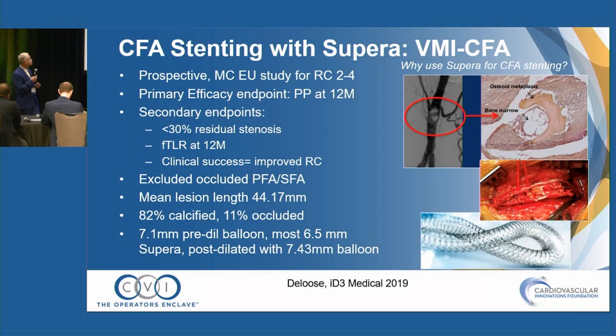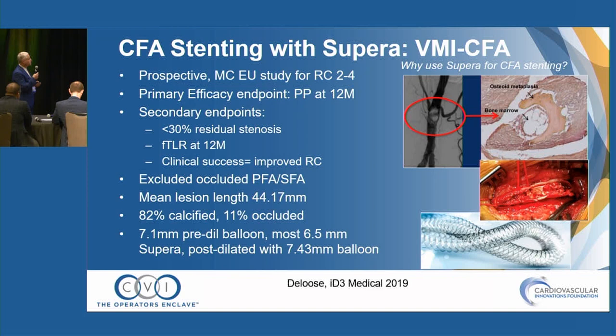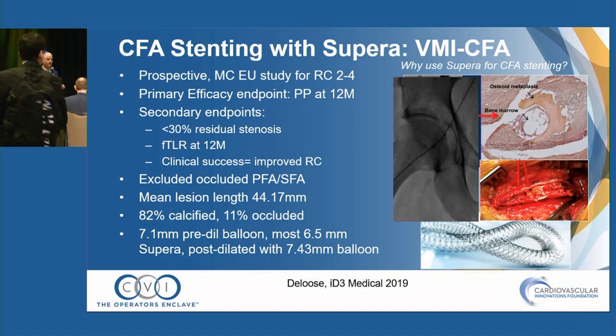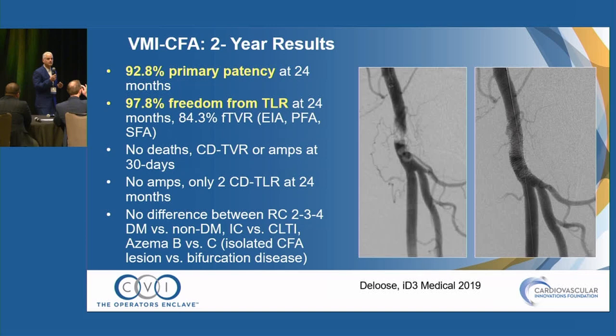The other study was the VMI, presented by Koundalus, using the Supera stent. Sometimes you have really nasty calcified common femorals. One advantage of Supera for the common femoral is that you can put a sheath through it afterwards if you need to access that extremity. In this study, they had 93% primary patency at two years, 98% freedom from TLR at two years, no deaths, no amputations, and no difference between diabetic versus non-diabetic, claudicants versus CLI, or isolated shaft versus bifurcation disease.